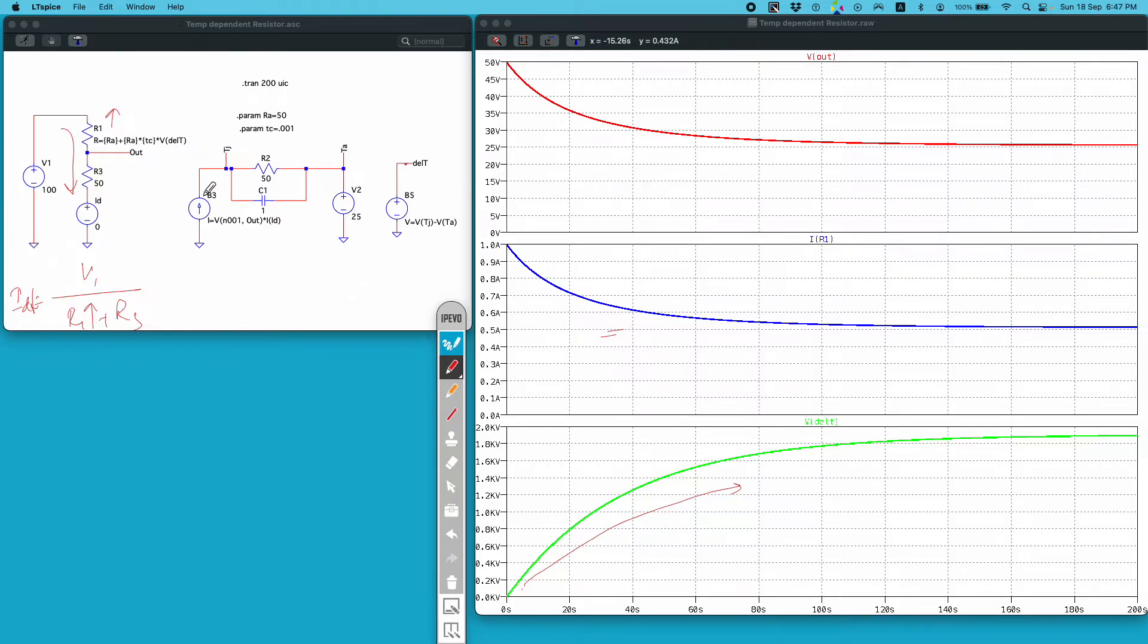Now as R1 increases, V out will decrease because V out will be given by R3 divided by R1 plus R3. As R1 is increasing my V out is decreasing. This is what is happening in the third plot or the top plot.